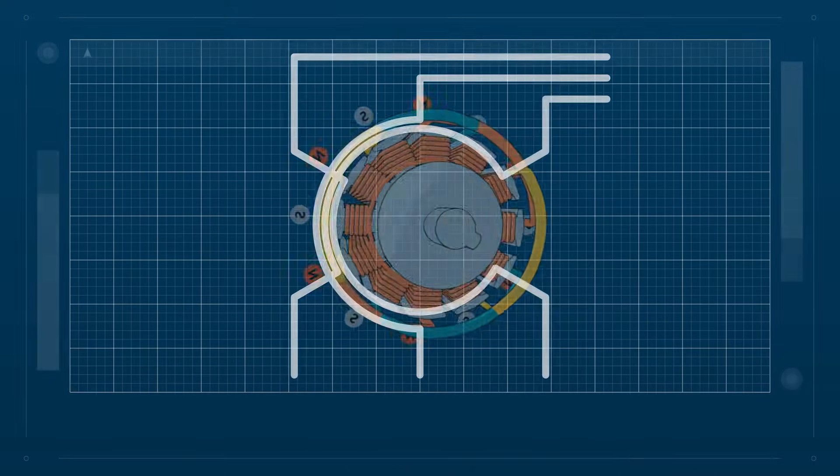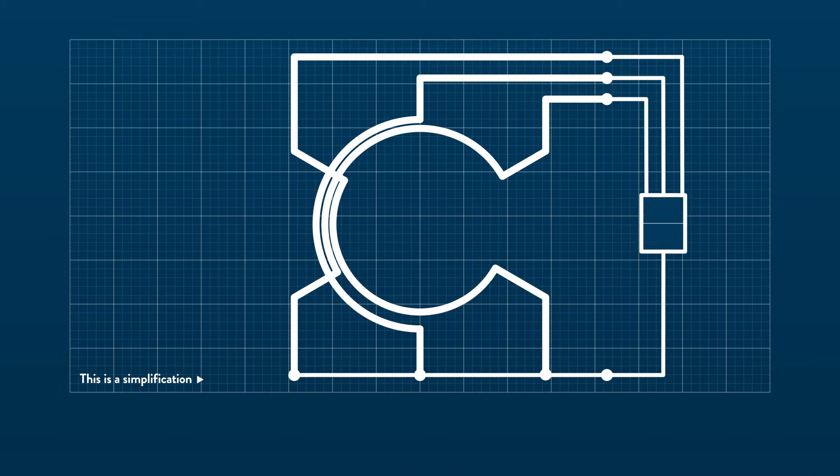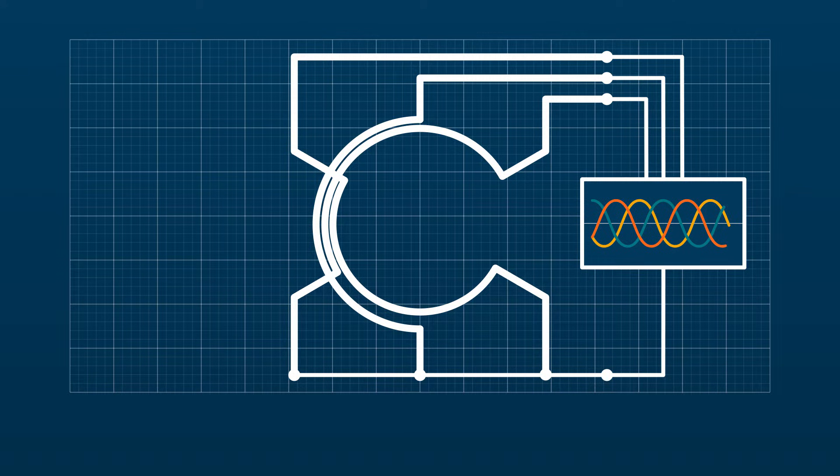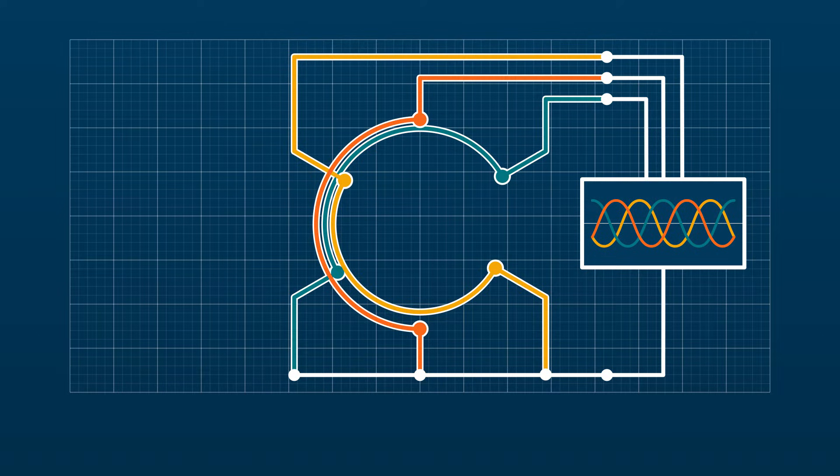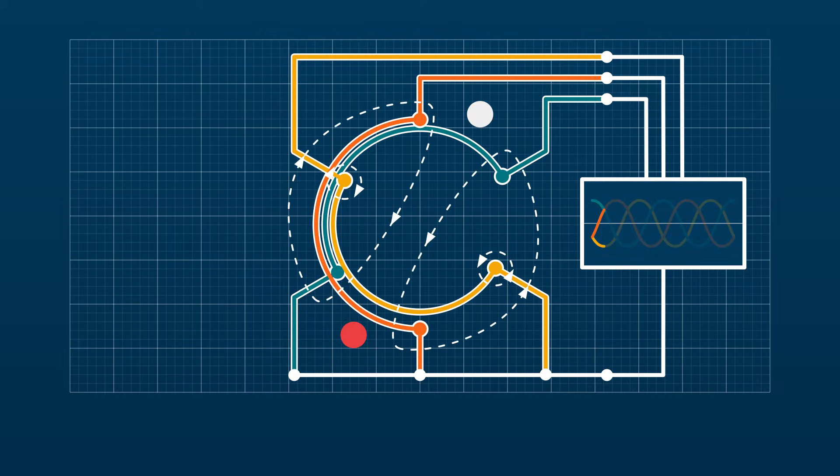Now let's consider that the armature coils are connected to the three-phase current of a grid. This 50 Hz, three-phase alternating current actually creates a rotating magnetic field, like this.